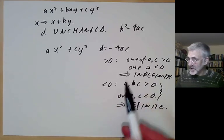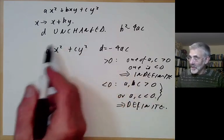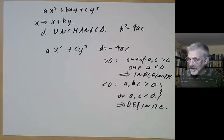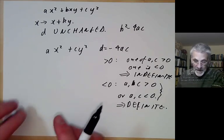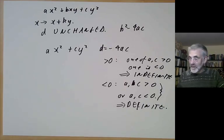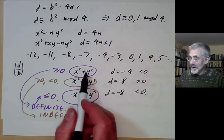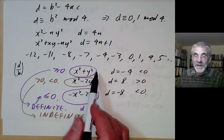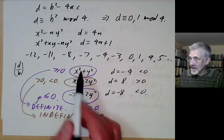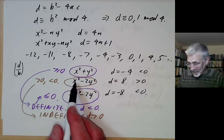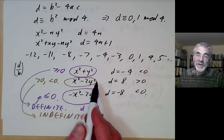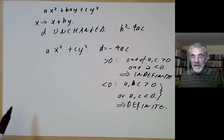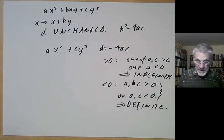The discriminant is called the discriminant because it discriminates between the cases when the form is definite or indefinite, and the theory of these two forms turns out to be quite different. You can see this geometrically: for a definite form, the equation x squared plus y squared equals a constant gives an ellipse (in fact a circle), whereas for an indefinite form, x squared minus 2y squared equals a constant is usually a hyperbola. So definite forms correspond to ellipses and indefinite forms correspond to hyperbolas.